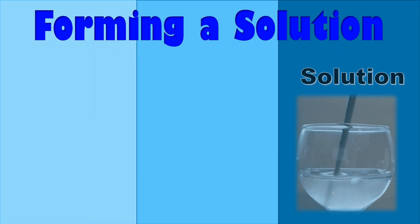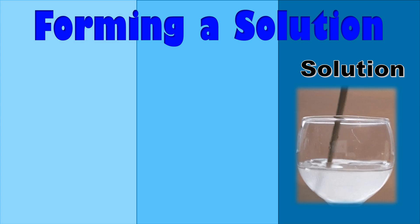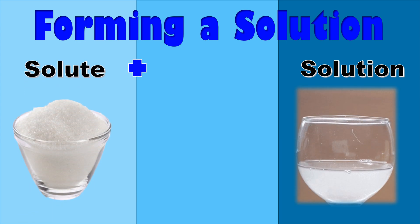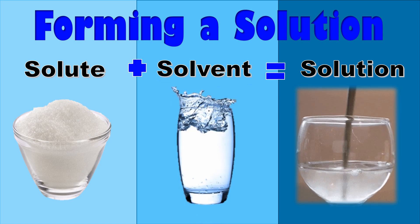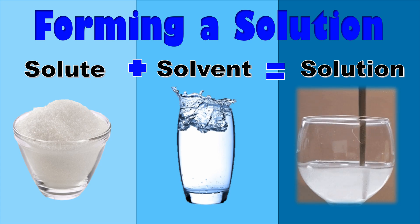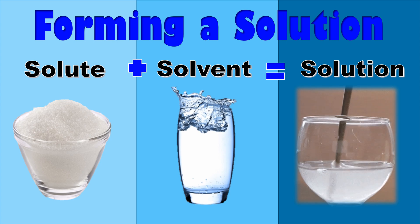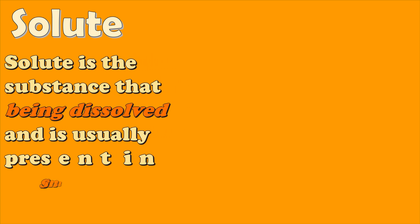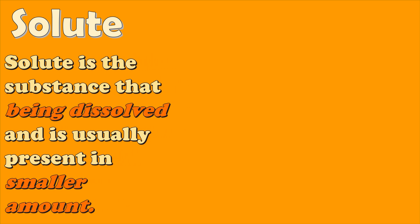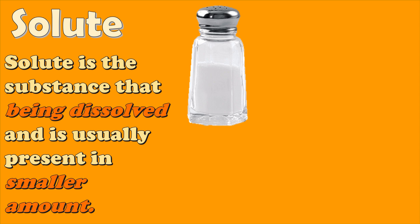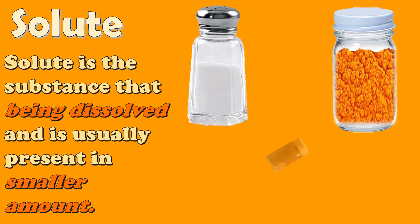To form a solution, you need two substances: the solute and the solvent. In our example, the solute is the sugar and the solvent is the water. When you look at a solution, it is not possible to distinguish or identify a solute from a solvent. Solute is the substance that is being dissolved and is usually present in a smaller amount. Some examples of solute are salt, juice powder, and coffee powder.